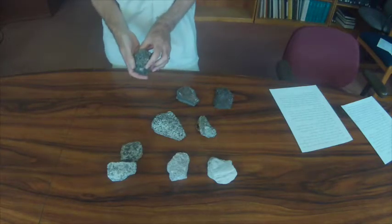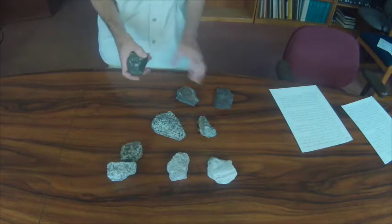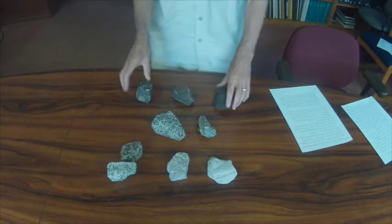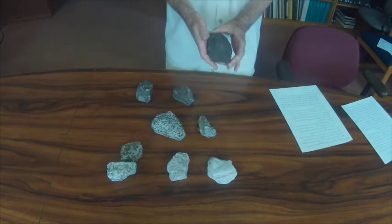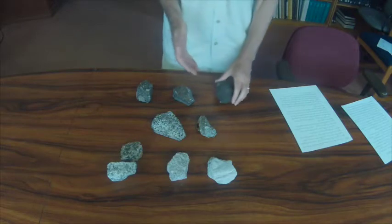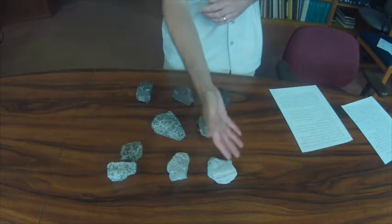So, the phaneritic rocks, the coarse-grained rocks, cooled at slower rates than the aphanitic rocks, and the glassy or vesicular ones occurred essentially instantly. And the same is true here for the felsic rocks.